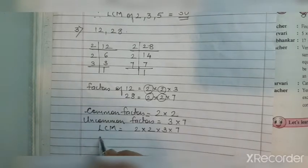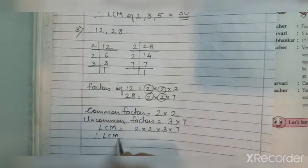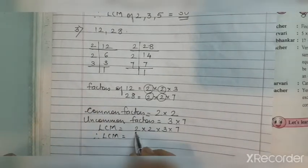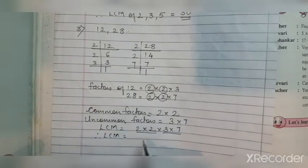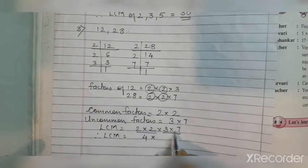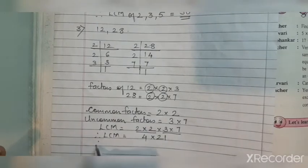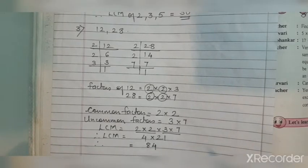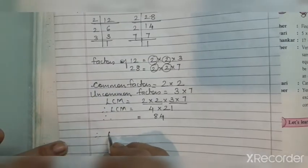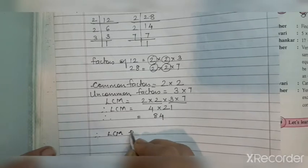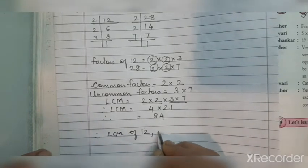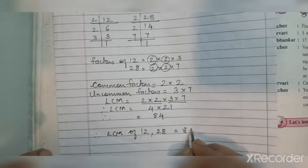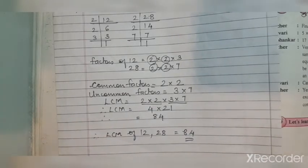For LCM we write common and uncommon together: 2 × 2 × 3 × 7. Calculating: 7 × 3 = 21, 21 × 2 = 42, 42 × 2 = 84. Or taking pairs: 2 × 2 = 4 and 7 × 3 = 21, and 4 × 21 = 84. Therefore LCM of 12 and 28 is 84. See that you write the final answer clearly. The 4th and 5th sums are cancelled.